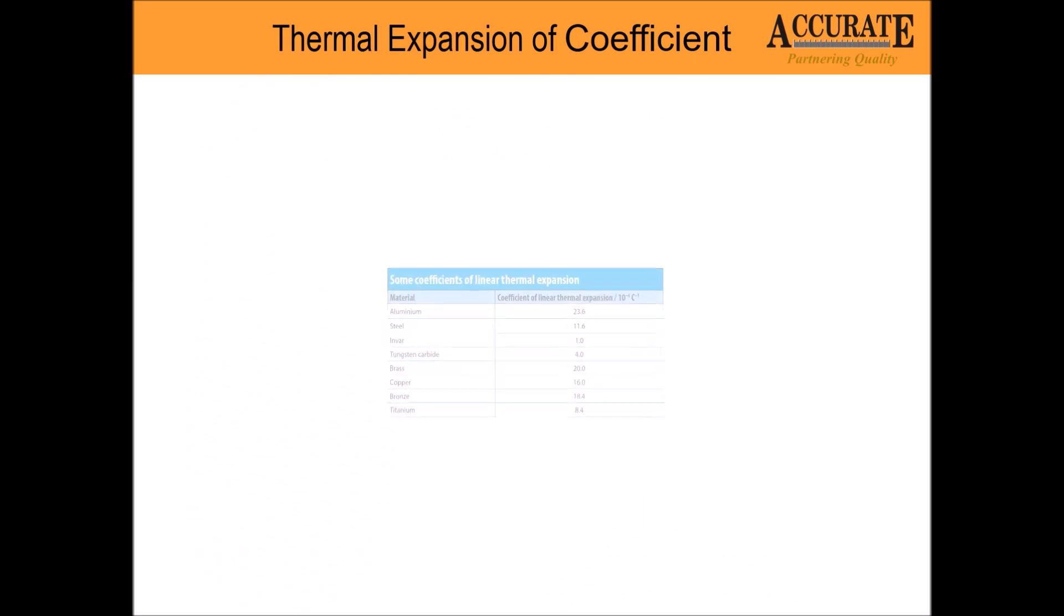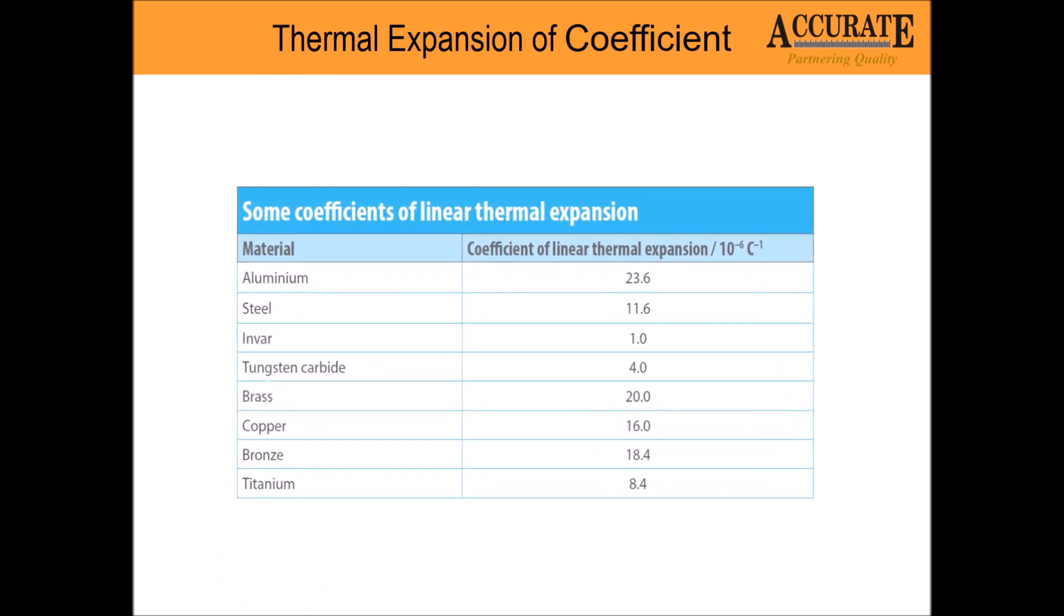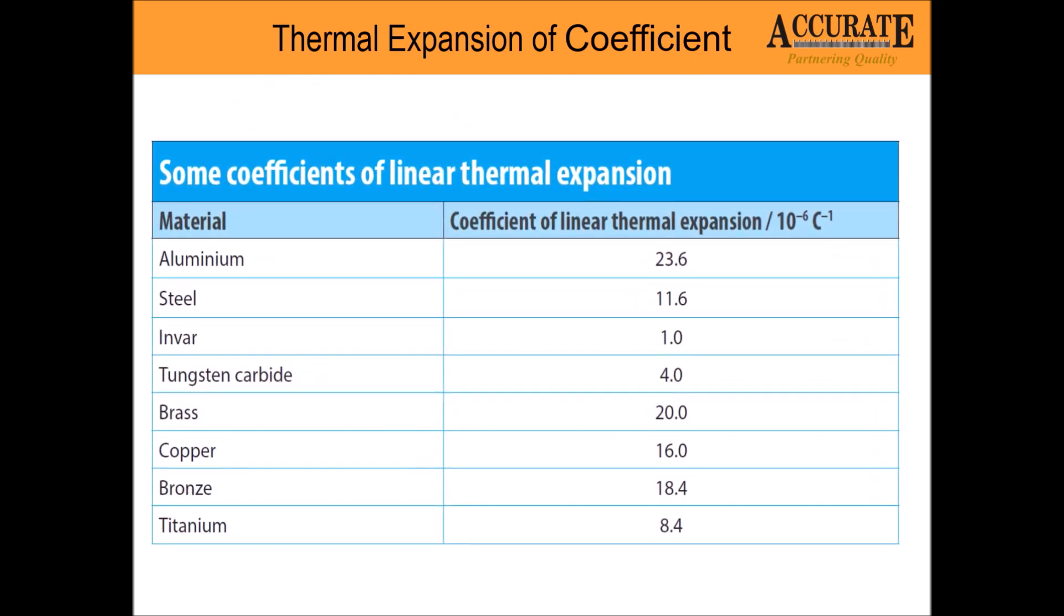Some of the material's expansion coefficients are: Aluminium 23.6 microns per degree per meter. Steel is 11.6 microns per degree per meter.